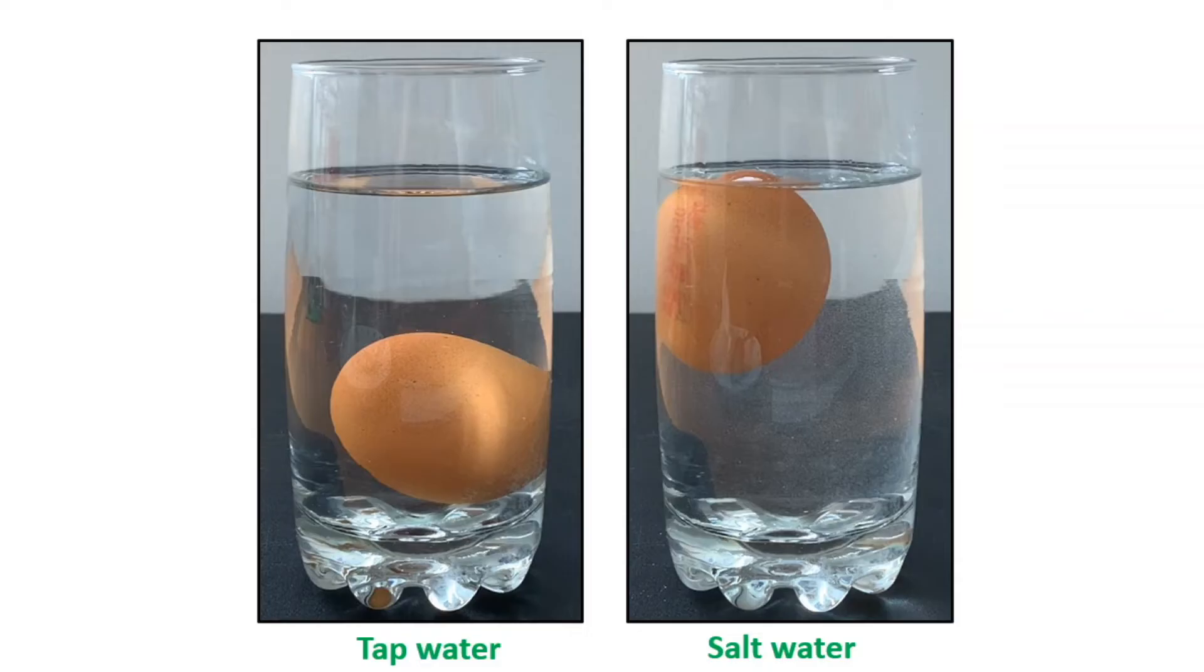When we added the egg to the tap water we saw that the egg sank to the bottom of the glass. This tells us that the density of the egg is greater than the density of the tap water. But when we added the egg to the salt water the egg floated. We know that the egg's density remained the same in this experiment. So this tells us that the density of the salt water mixture is higher than the density of the tap water.